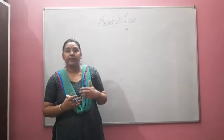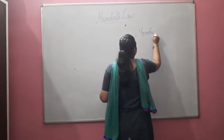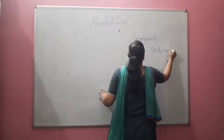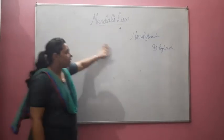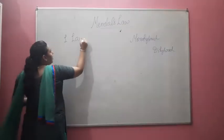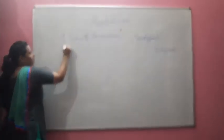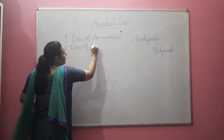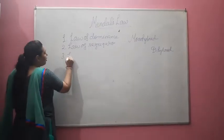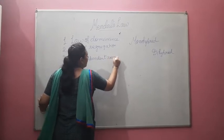Mendel's Laws are dependent on two different factors, two different types of cross. One is mono-hybrid and the other one is di-hybrid cross. On the basis of these two, there are three different laws given by Mendel. The first law is the Law of Dominance, the second law is the Law of Segregation, and the third law is the Law of Independent Assortment.